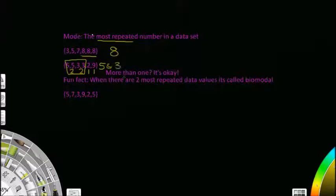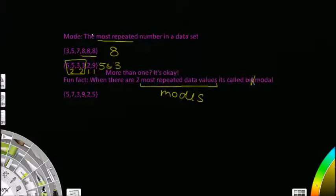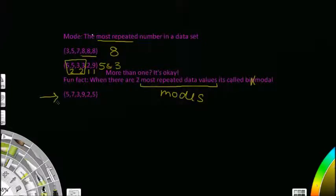When there are two modes, it's called bimodal. Mode is kind of optional — there could be one mode, more than one mode, or no mode at all. If each value in the data set appears only once, then there's no mode.